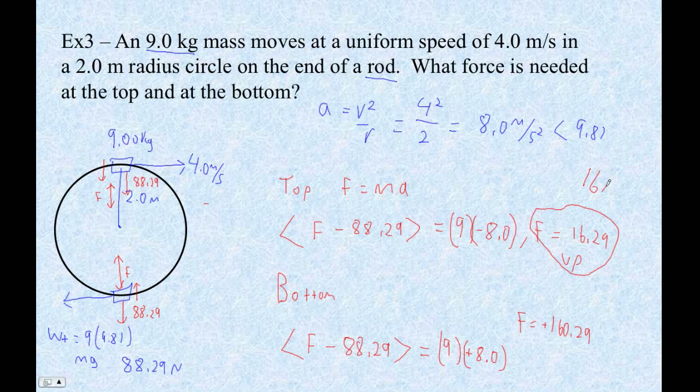Now with sig figs, I guess we'd have to say 16 newtons up. And with this one with two sig figs, we'd have to say 160, no decimal point newtons up.